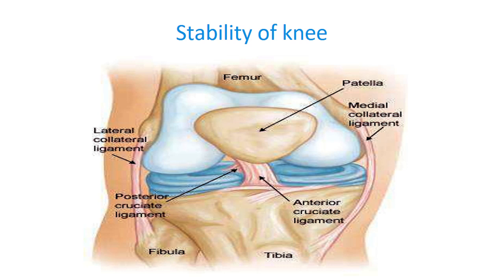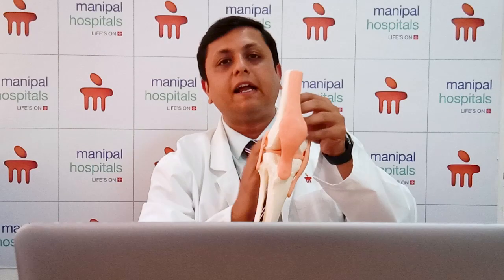The main stability is provided by four major ligaments of the knee joint: the anterior cruciate ligament, the posterior cruciate ligament, the medial collateral ligament, and the lateral collateral ligament. Two ligaments are inside the knee joint, providing stability, and two ligaments are on either side, providing sideways stability.